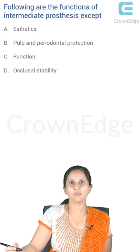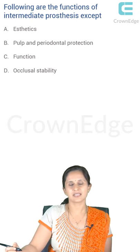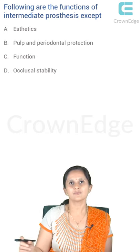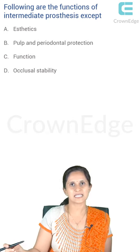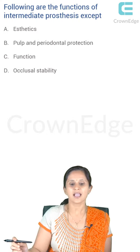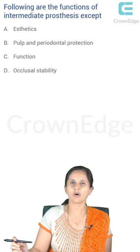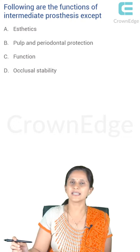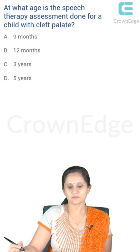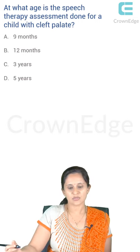Following are the functions of intermediate processes except — this is a straightforward question. Intermediate processes are used for pulp and periodontal protection, for retention of function so the patient doesn't have difficulty chewing, and for occlusal stability. However, aesthetics is not always a concern when using a temporary or intermediate restoration. So the answer is A.